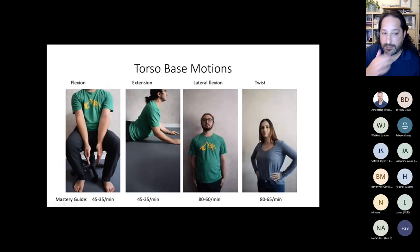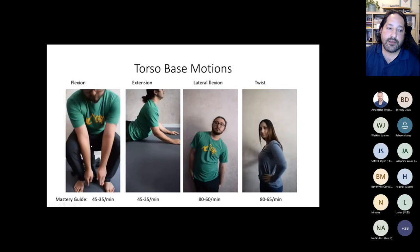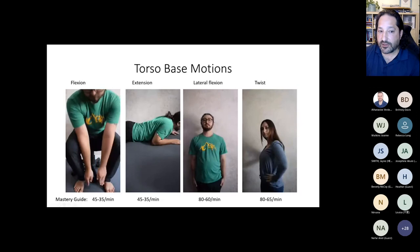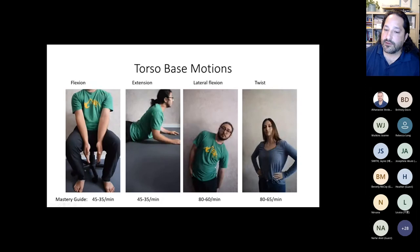Torso flexion is simply being able to bend over between your legs and touch the floor — always meeting the learner where they're at. If they can't reach the floor, we'll put a shoe box or milk crate between their legs. Extension is like a cobra pose in yoga. Lateral flexion is being able to slide your arms down the side of your legs. Twist is just doing the twist.